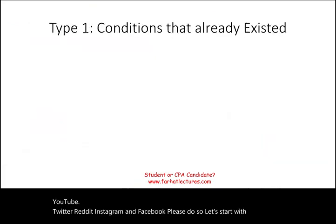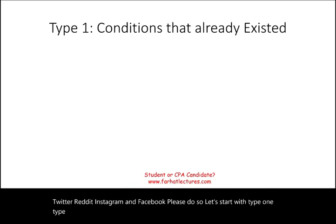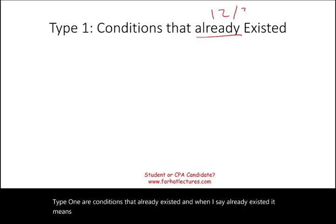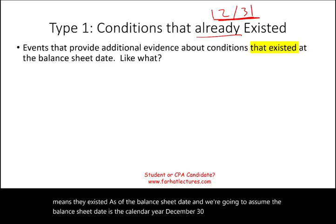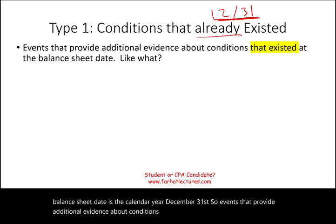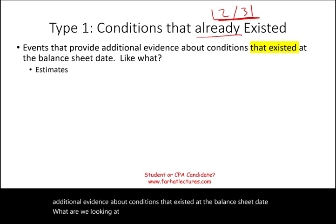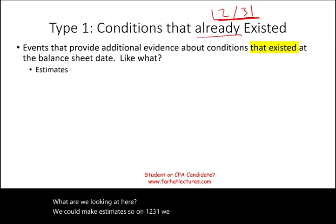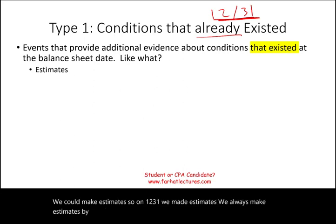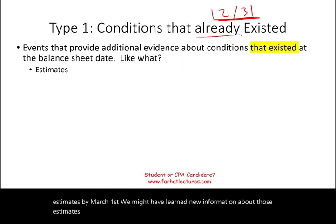Let's start with Type 1. Type 1 are conditions that already existed — and when I say already existed, it means they existed as of the balance sheet date, December 31st. These are events that provide additional evidence about conditions that existed at the balance sheet date. For example, on 12/31 we made estimates — we always make estimates. By March 1st, we might have learned new information about those estimates. Those are Type 1 conditions.